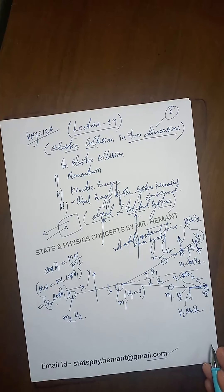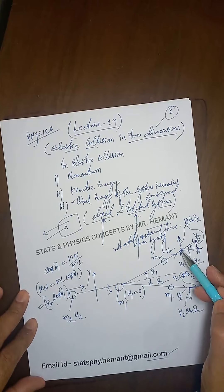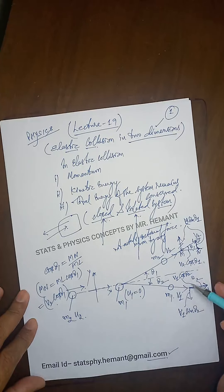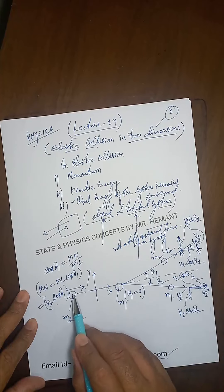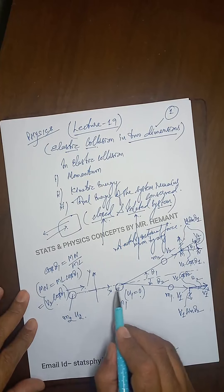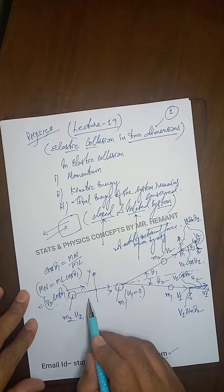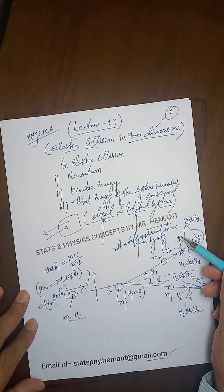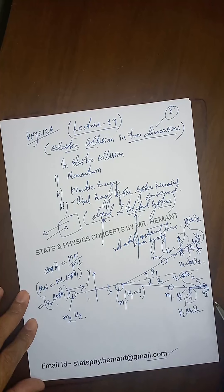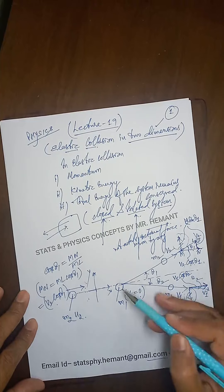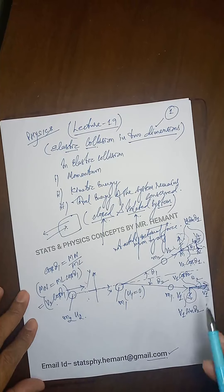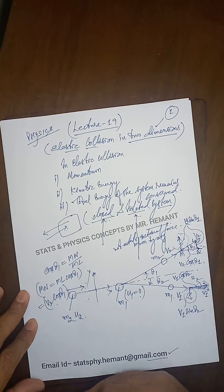We have resolved all the velocity components — horizontal and vertical. The vertical components v2 sin theta 1 and v1 sin theta 2 are in opposite directions. Since there was no vertical momentum before the collision, these two components must cancel out. After the collision, only the horizontal components survive. So we can now equate the momenta accordingly.